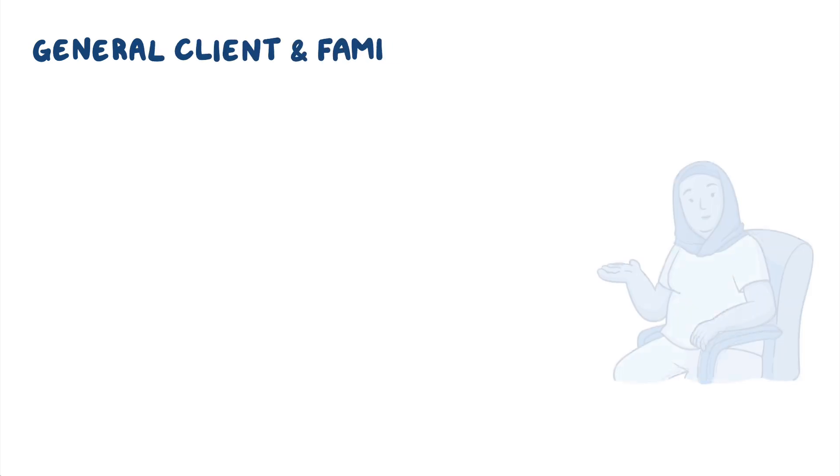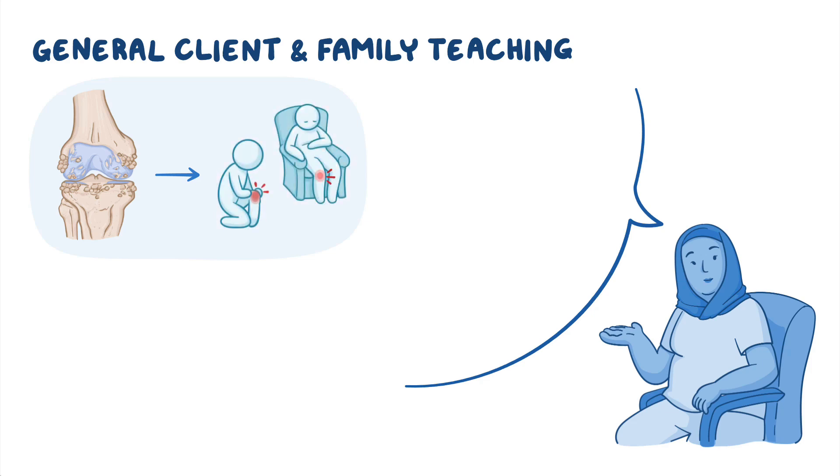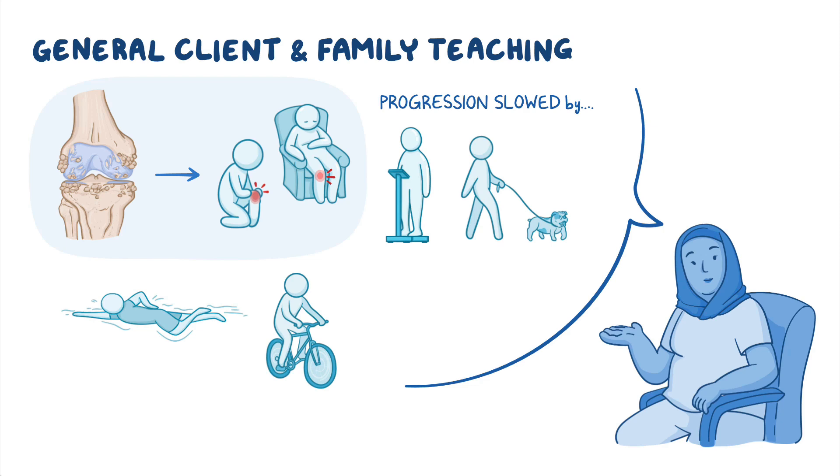Now, moving on to client teaching. Explain how osteoarthritis affects their joints, resulting in pain and impaired function. Teach your client that disease progression can be slowed by lifestyle modifications, such as maintaining a healthy weight, as well as engaging in regular physical activity. And advise your client to choose activities that minimize stress on the joints, such as swimming, bicycling, walking, or rowing.